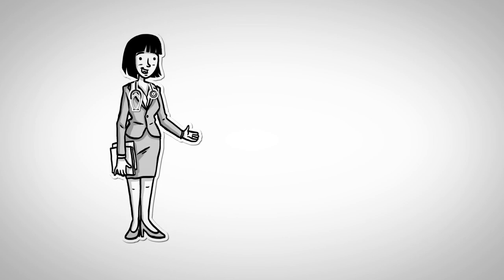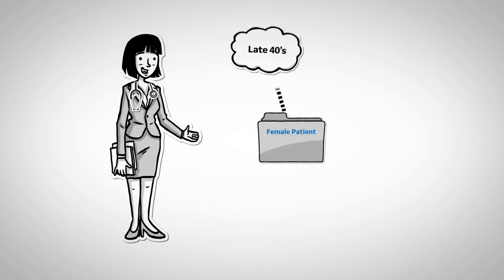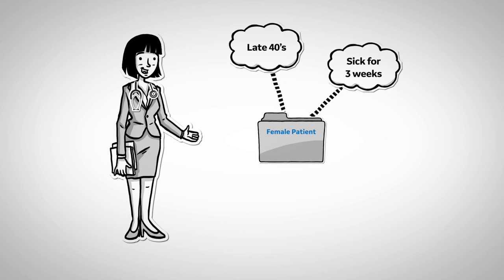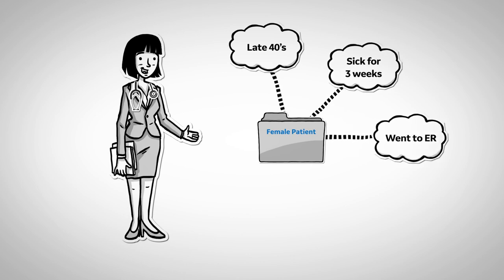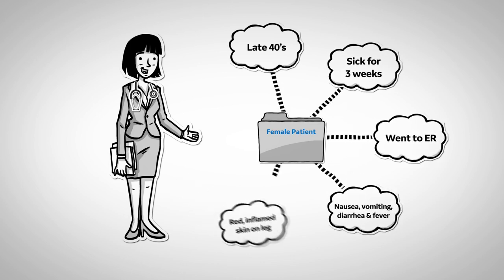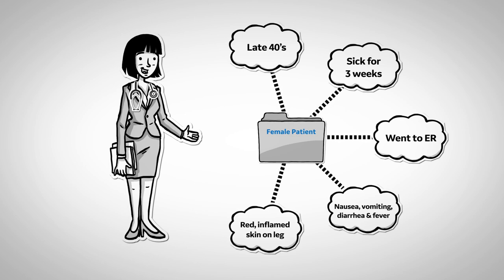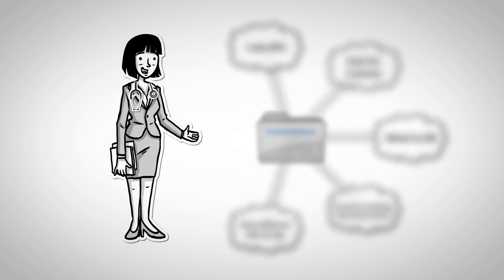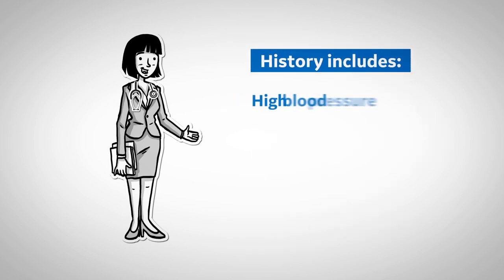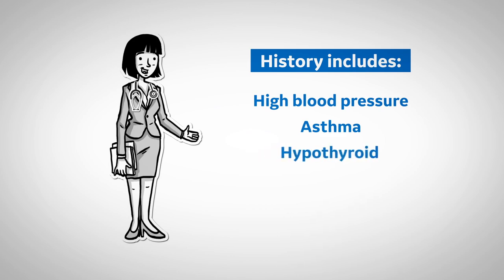This case involves a female patient in her late 40s. She had been sick for three weeks and was admitted to the emergency department with bad diarrhea and cellulitic changes of the leg. The patient's history included high blood pressure, asthma, hypothyroidism, bipolar disorder, and obesity.